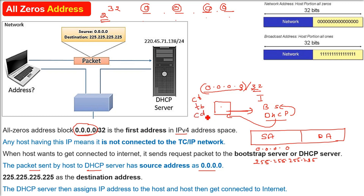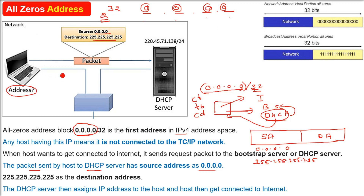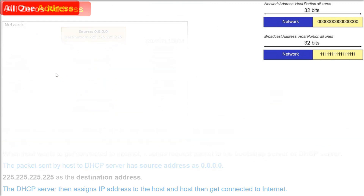The host can be a computer, tablet, or any other computing device. The DHCP server — the server giving the IP — will assign an IP address to the host, and the host will then get connected to the internet. That is the whole scenario of the all-zero address.